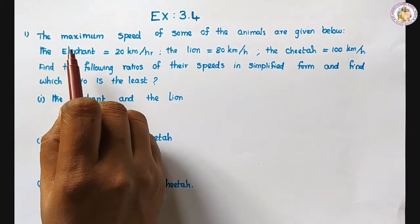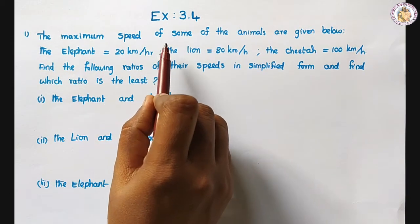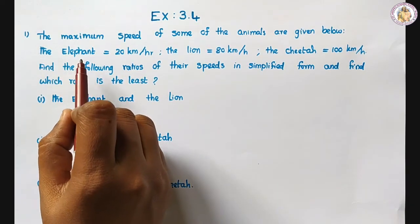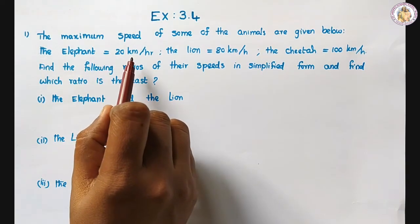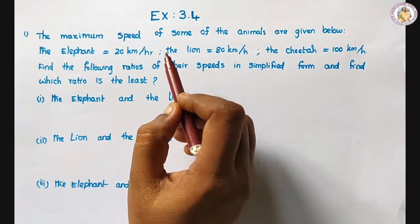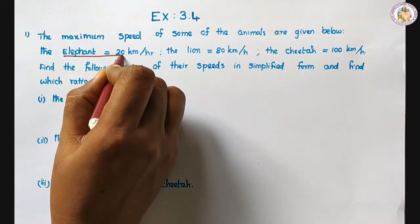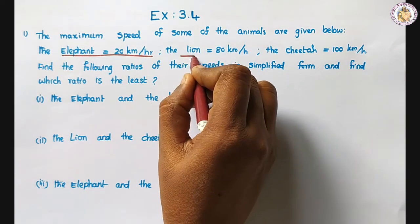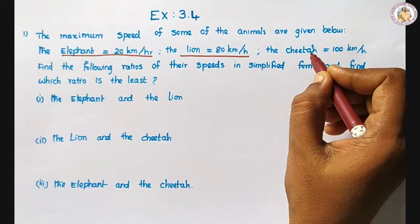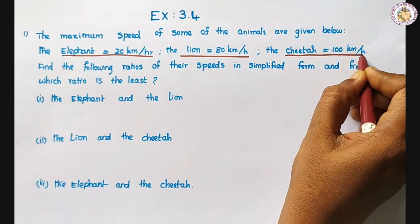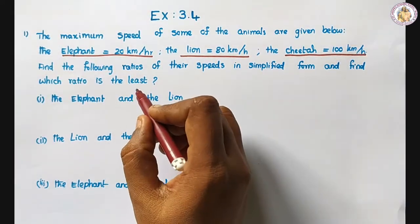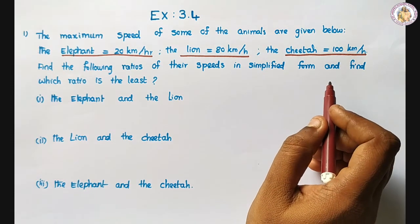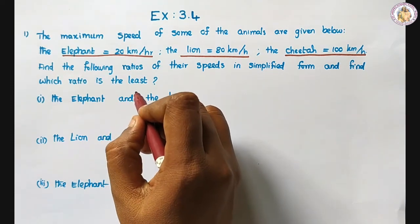First question: the maximum speed of some of the animals are given below. The elephant equals 20 km per hour, lion equals 80 km per hour, cheetah is 100 km per hour. Find the following ratios of this speed in simplified form and find which ratio is the least.